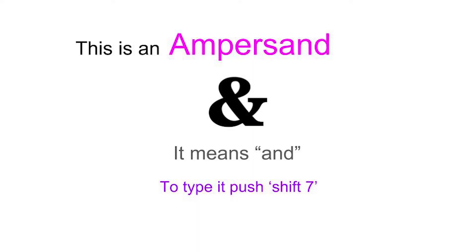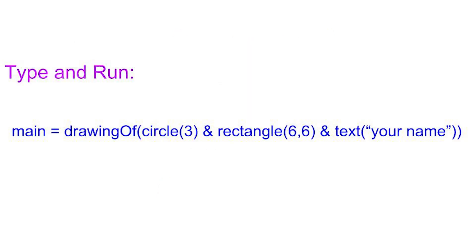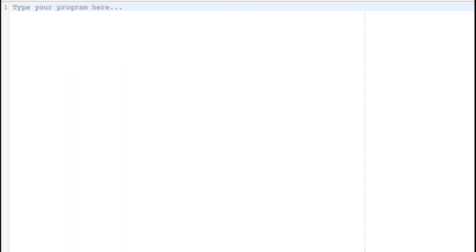Now you'll learn how to add multiple elements to your drawing at the same time. The way we do this is with a symbol called the ampersand. It means and, and to type it you push shift 7 on most computers. Type and run this program. Drawing of, open parenthesis, circle 3, ampersand, rectangle with parameter of 6, 6, ampersand, text, parenthesis, make sure you have your quotation marks, write your name, close the text function, and close your program, your drawing of function.